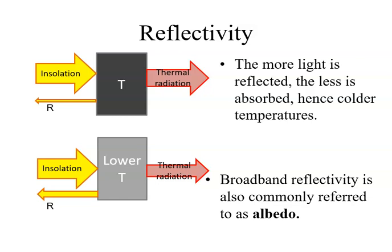If the surface, however, reflects some of the sunlight, less of it gets absorbed, and hence, it can balance thermal equilibrium at lower temperatures. Notice in this diagram that the sum of the outgoing radiation is still equal to the incoming radiation.